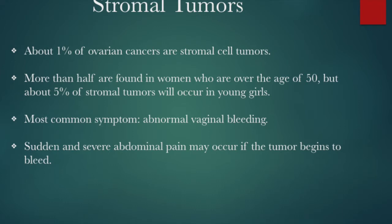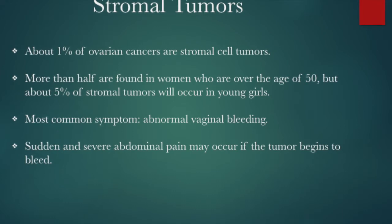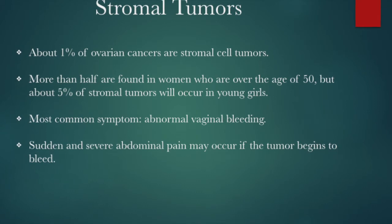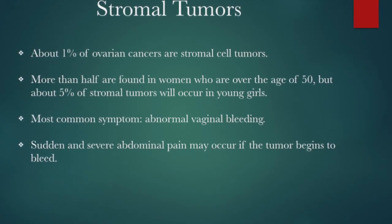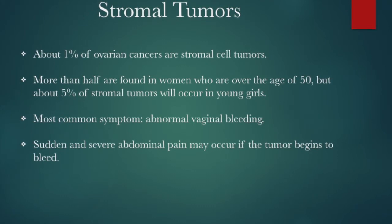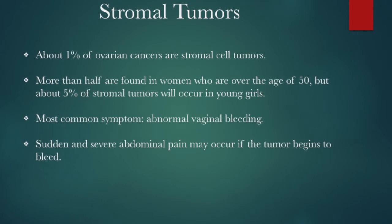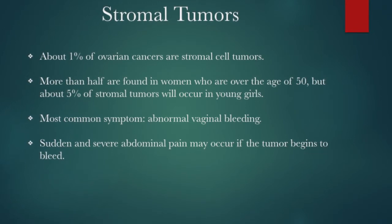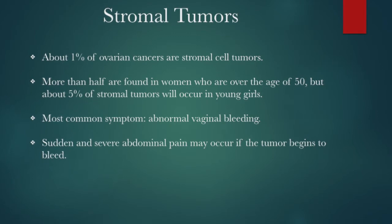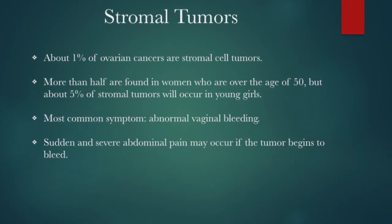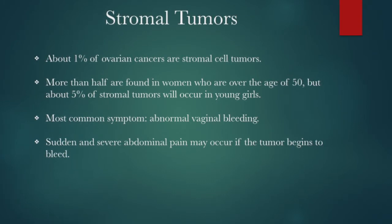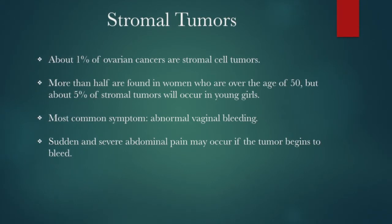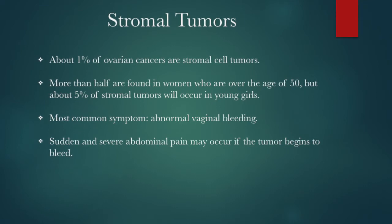Ovarian stromal tumors account for about 1% of ovarian cancers. These are usually found in women over the age of 50, but about 5% do occur in young girls. There are different types of malignant stromal tumors: granulosa cell tumors, granulosa theca tumors, and Sertoli-Leydig cell tumors. These are considered to be low grade cancers. Many stromal tumors produce the hormone estrogen, which can cause vaginal bleeding, so the most common symptom is abnormal or postmenopausal bleeding. These tumors can also bleed, causing sudden and severe abdominal pain. This type is often found at an early stage and has a good outlook, with more than 75% of patients surviving long term.